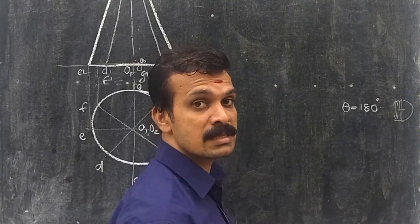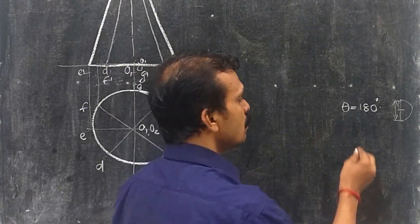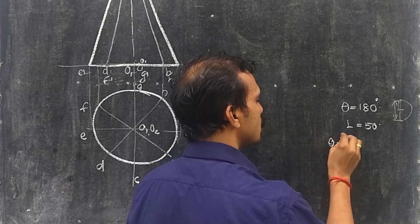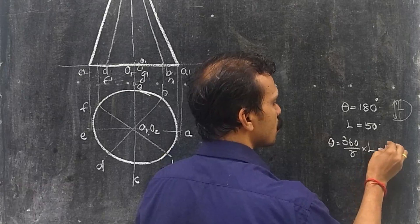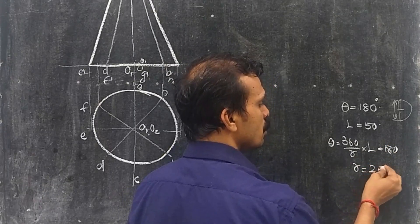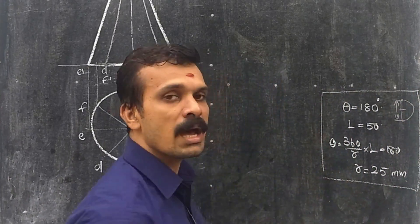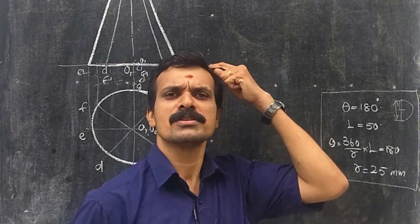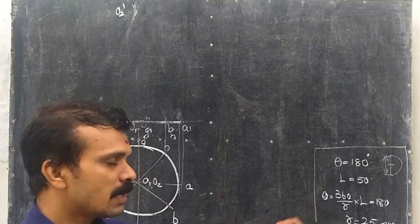Using the formula theta equals 360 times r divided by L, where L is given as 50mm, we get 180 = 360 × r / 50. With this calculation, we obtain r equal to 25mm, which is the radius of the cone. So the radius of the cone has been obtained as 25mm.